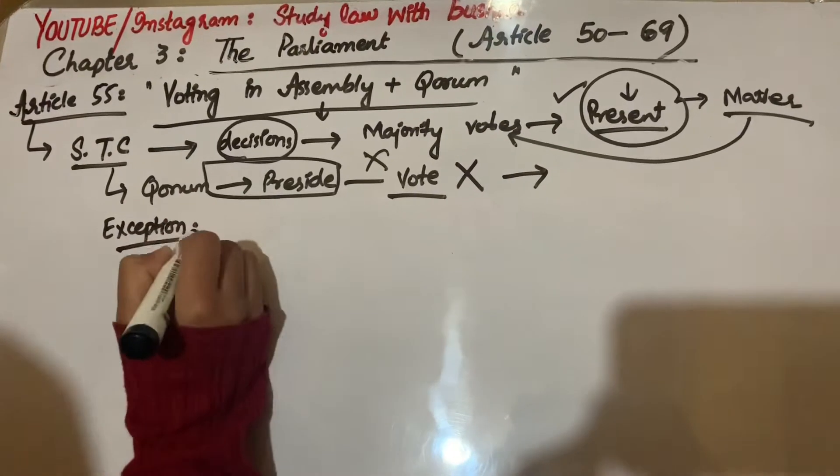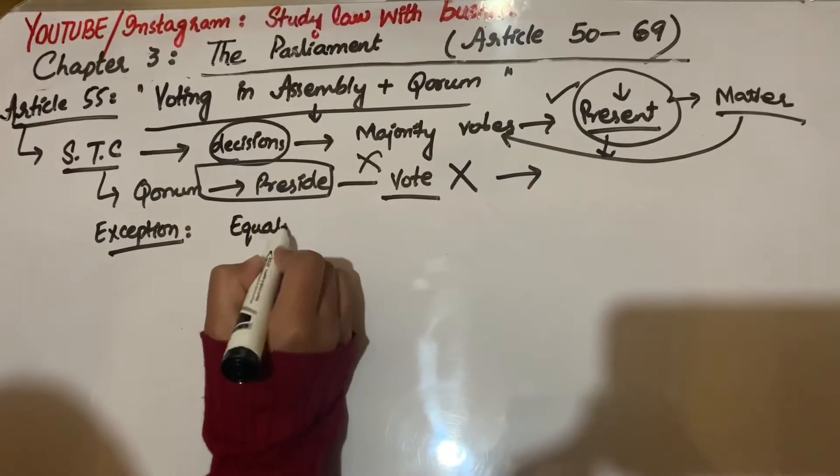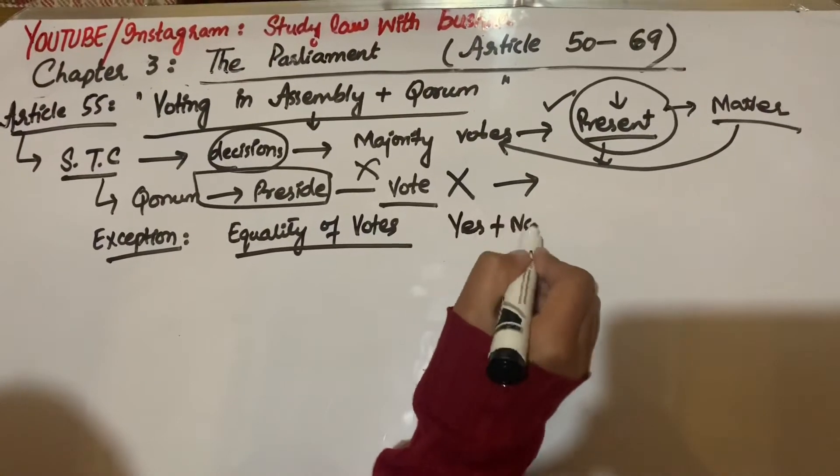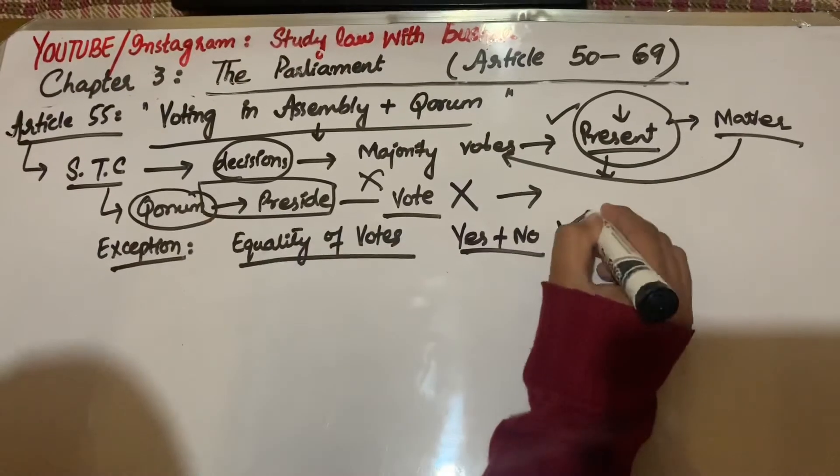The person presiding over the quorum cannot vote; he doesn't have this right. But one exception is given: he can vote in case of equality of votes.